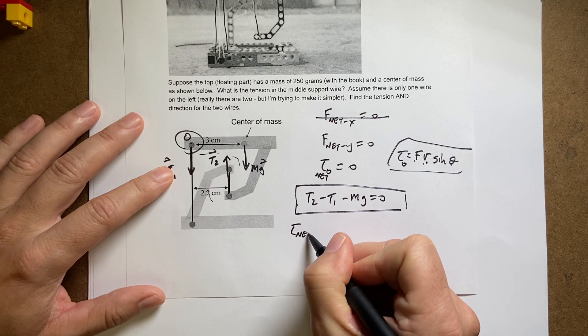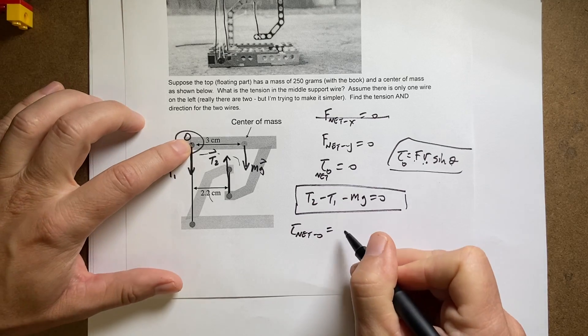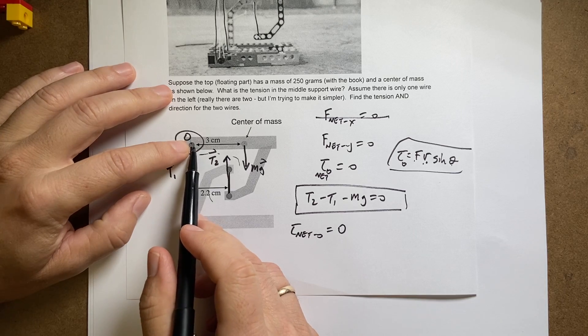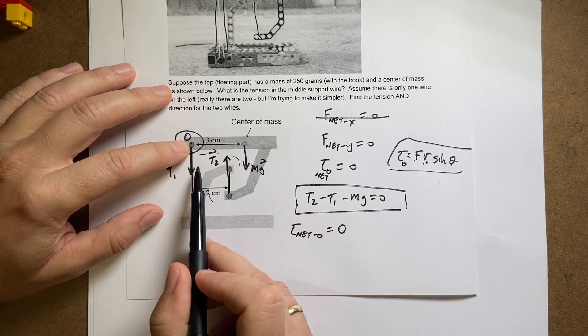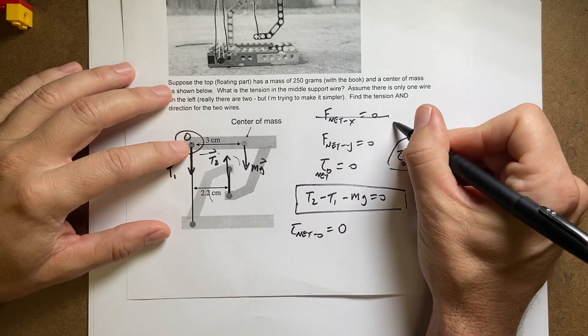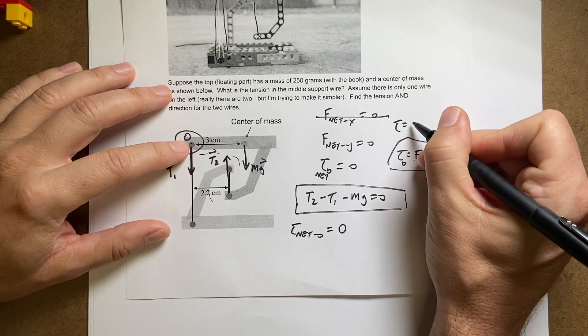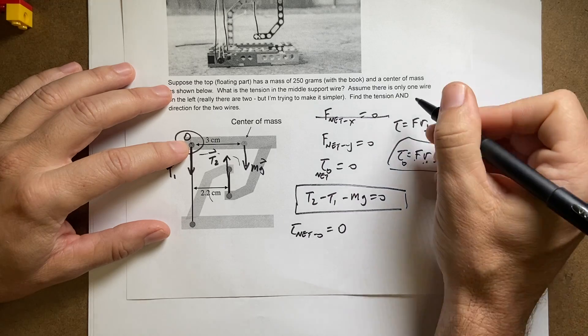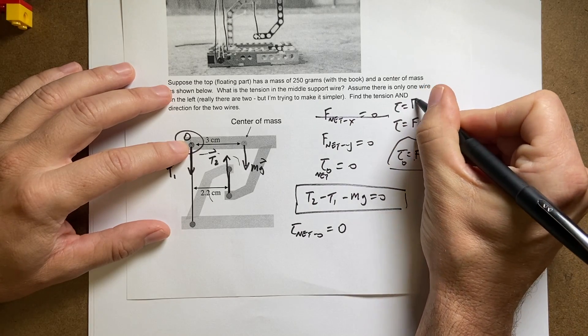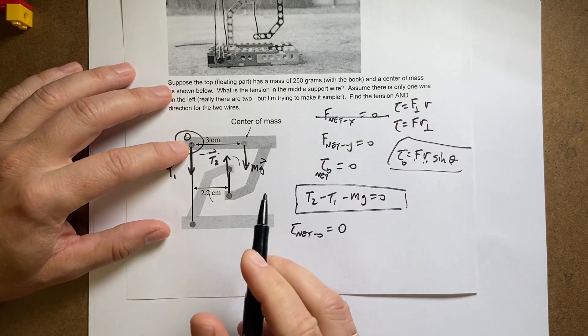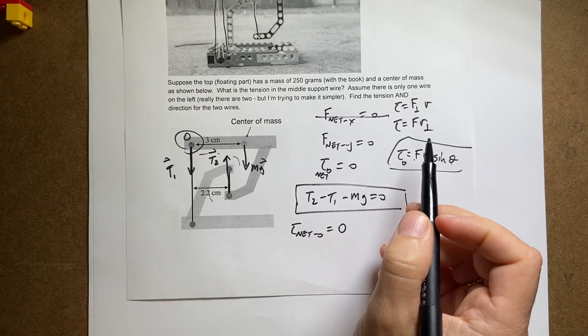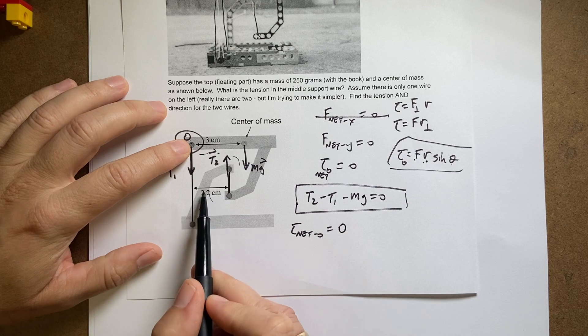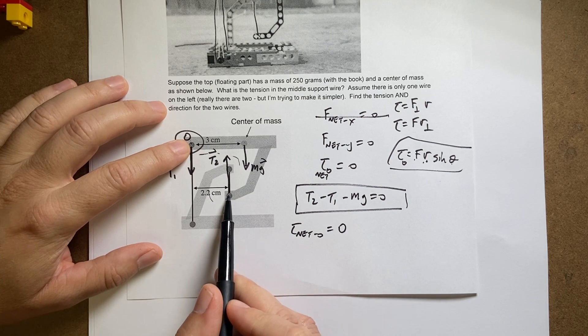So torque net O equals, this one's going to be zero, because it has no torque distance. Now, the next one, I can actually use, there's two versions of torque. Torque equals F R perpendicular, that's the same thing as this, and there's also torque equals F perpendicular R. So if I find, as long as those two things are perpendicular, that's cool.